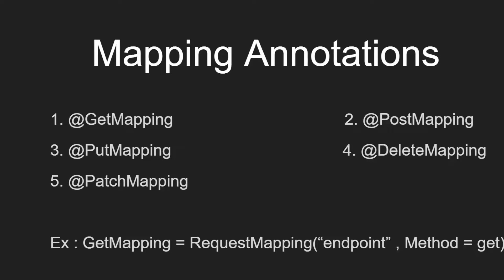So the mapping annotations — we all know there are various HTTP methods used for connecting to the server: GET, POST, PUT, DELETE, and PATCH. Till now in this series, whenever we needed to hit a GET, POST, or any other request, we were using the RequestMapping annotation, specifying the endpoint and the method type explicitly.